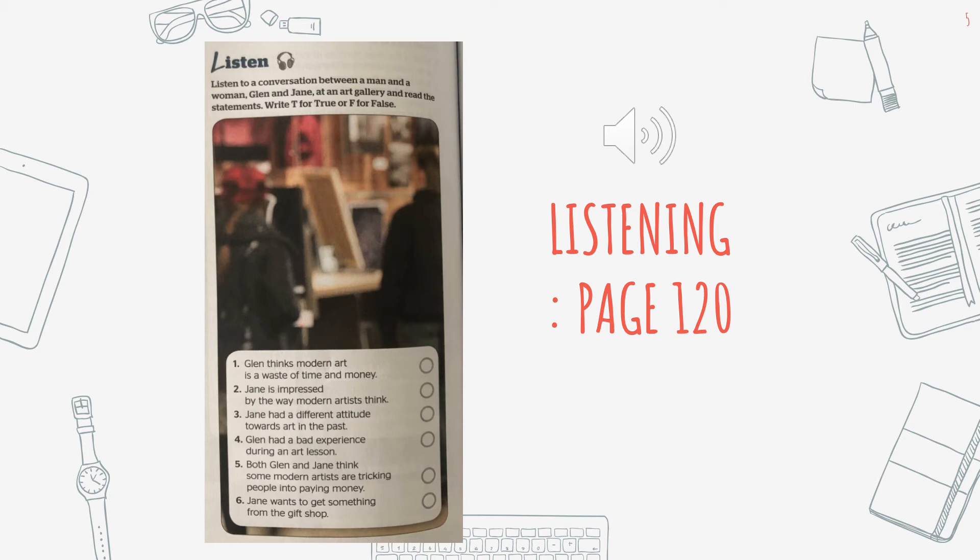Listen. Listen to a conversation between a man and a woman — Glenn and Jane — at an art gallery, and read the statements. Write T for true or F for false.